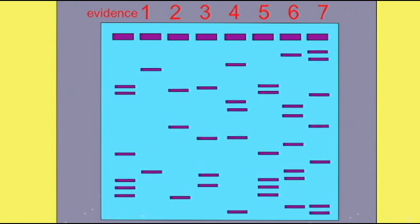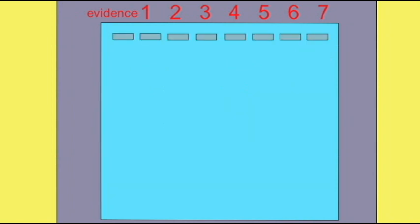If there are a number of potential suspects which the criminal justice system is attempting to link to this sample, then one can perform DNA fingerprints on their cells as well.